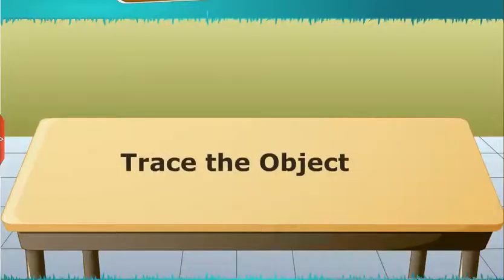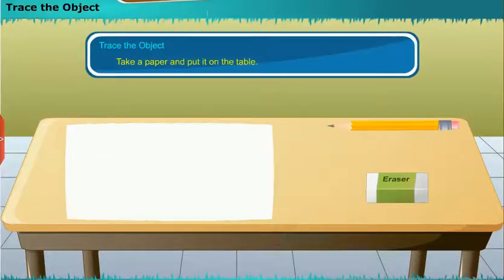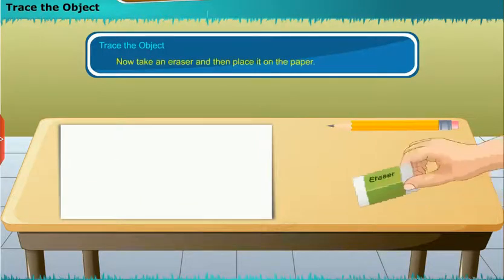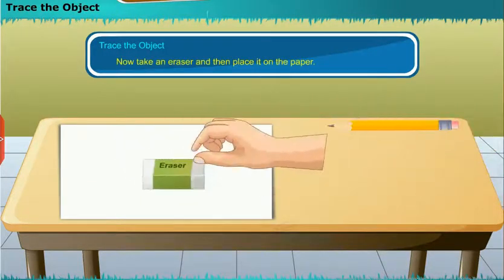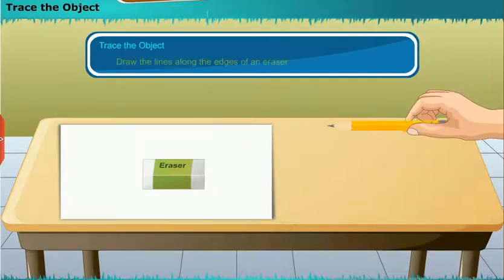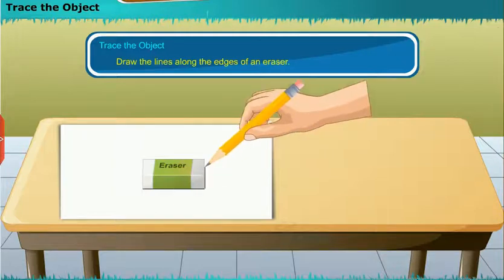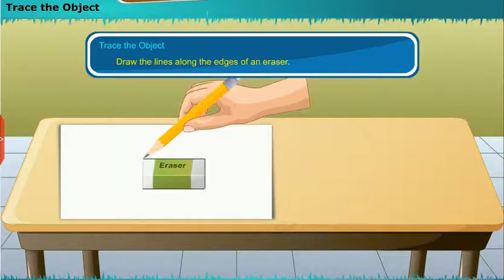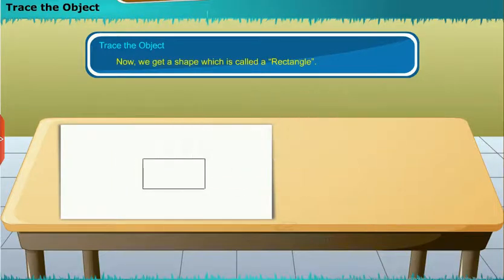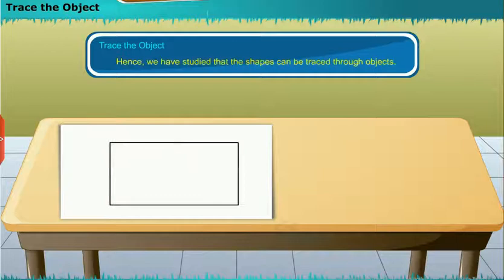Now let us know how shapes can be traced through objects. Take a paper and put it on the table. Now take an eraser and place it on the paper. Take a pencil or marker and draw lines along the edges of the eraser. Now we get a shape which is called a rectangle. Hence we have studied that shapes can be traced through objects.